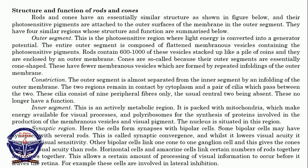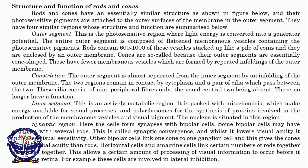The photoreceptor layer is divided into four segments. First, we have the outer segment. The outer segment is the photosensitive region where light energy is converted into the generator potential. The entire outer segment is composed of flattened membranous vesicles containing photosensitive pigment. Rods have many of these vesicles stacked up like a pile of coins, and they are enclosed by an outer membrane.